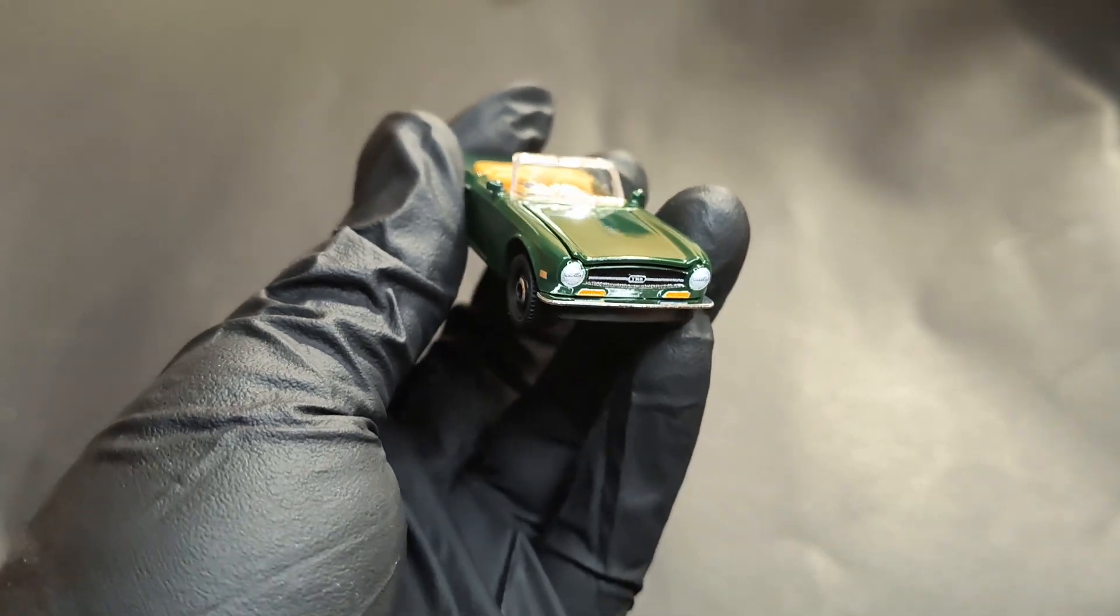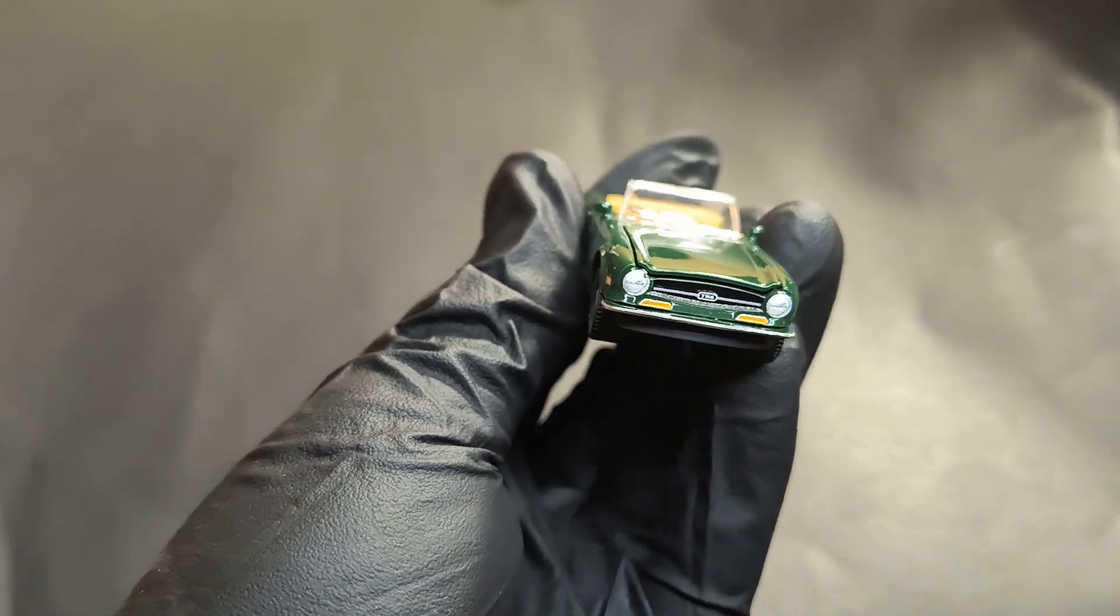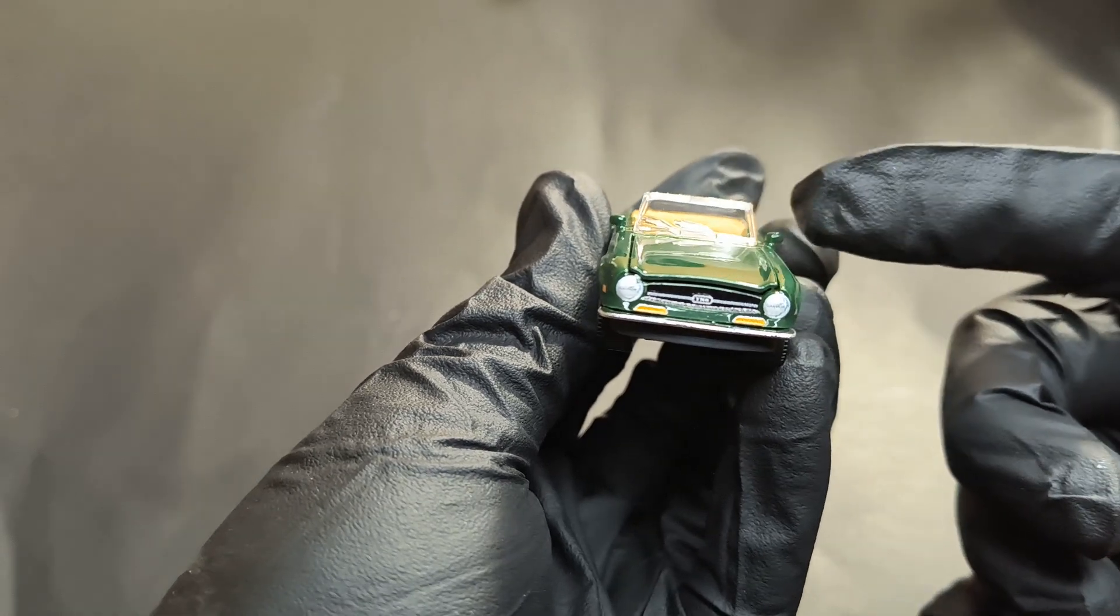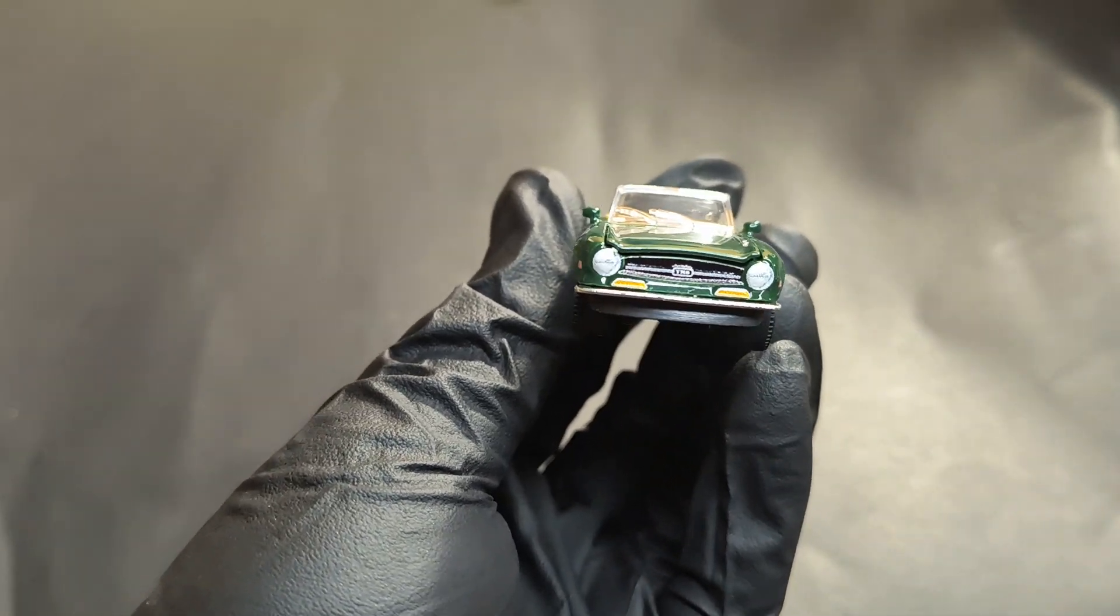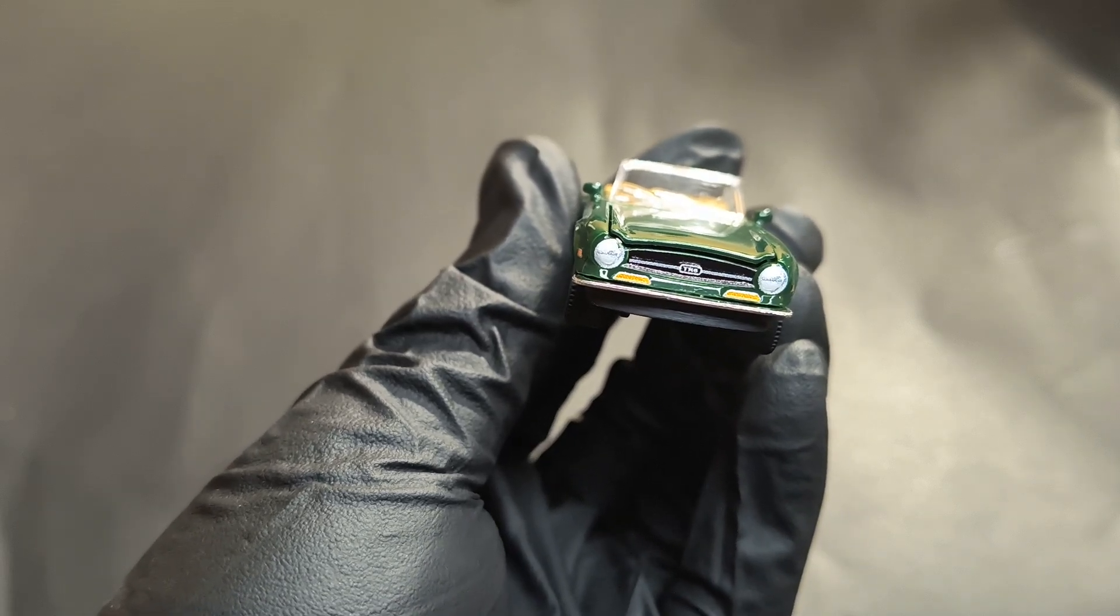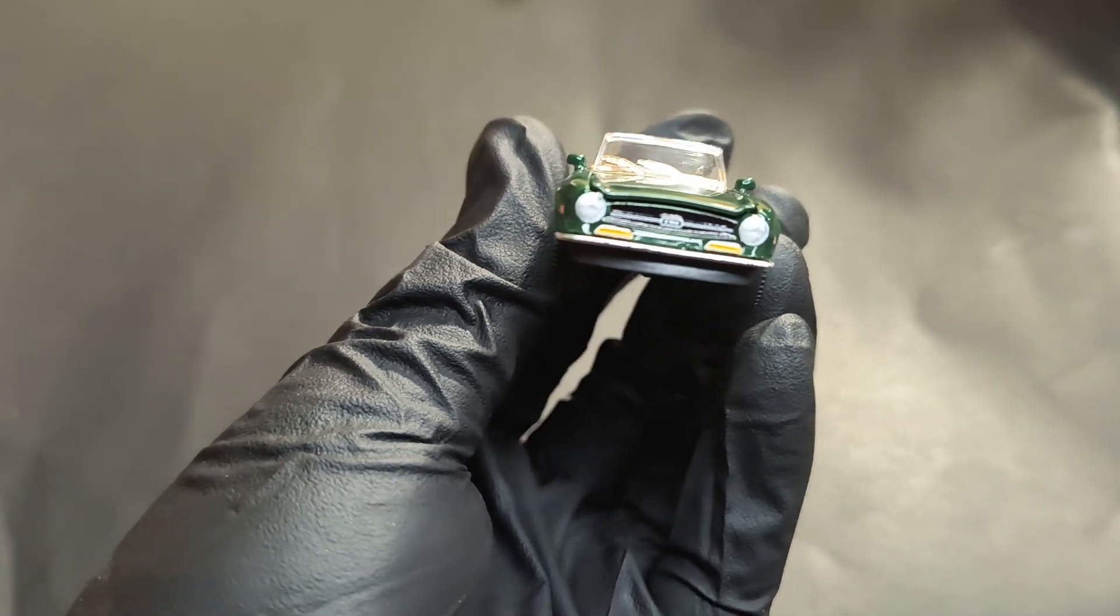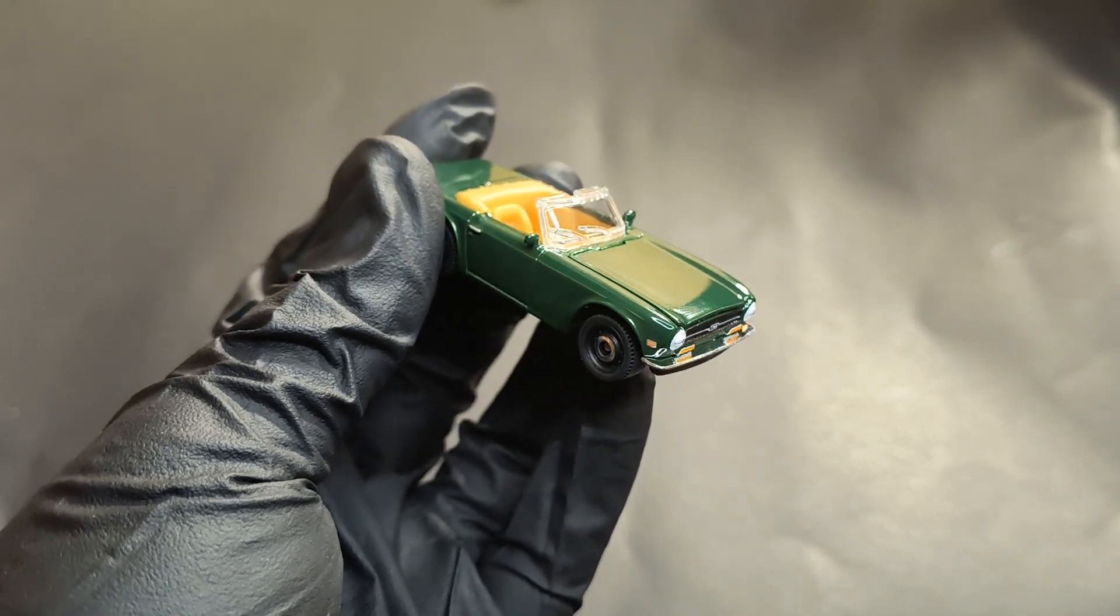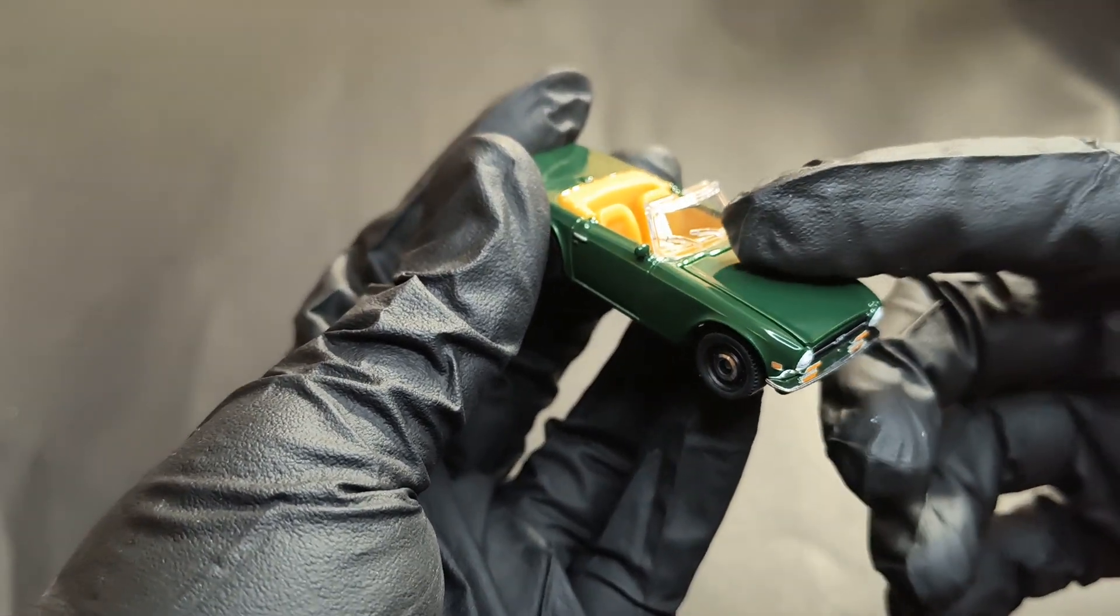You can notice the two rearview mirrors, and these actually look nice. They look like original ones, not just stick-on kind just to be there. Apart from that, you can see the windshield wipers and sun visors. Again, a nice small detail. Let's go to the driver side.